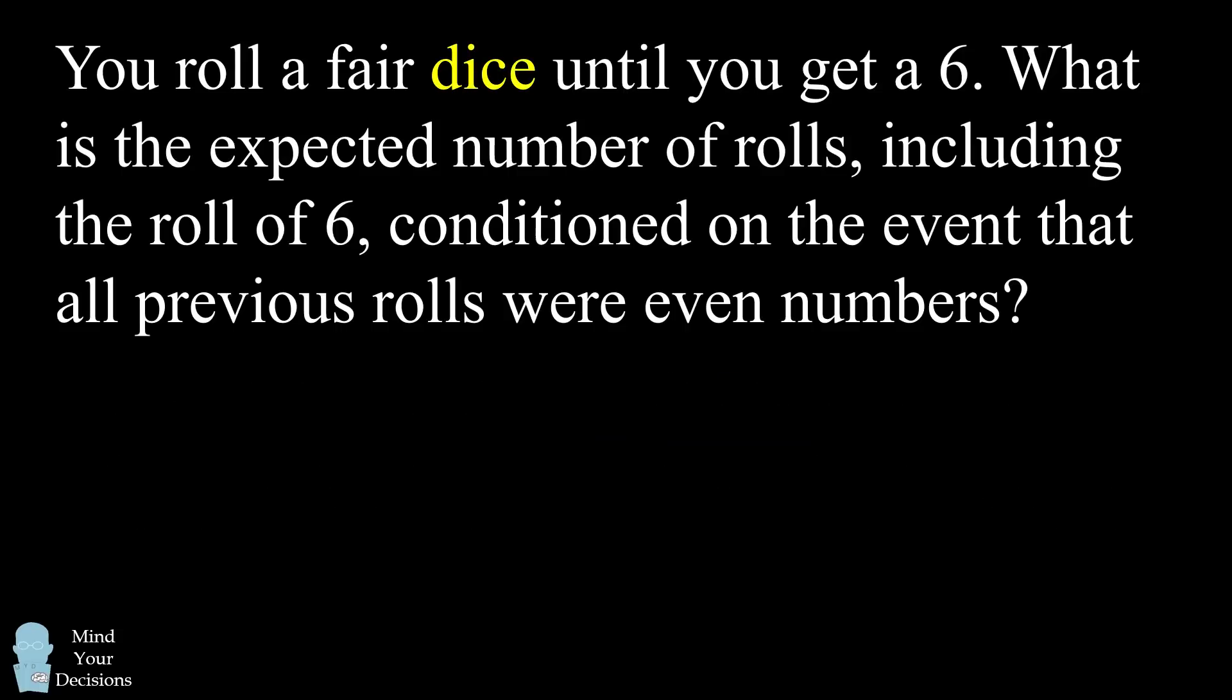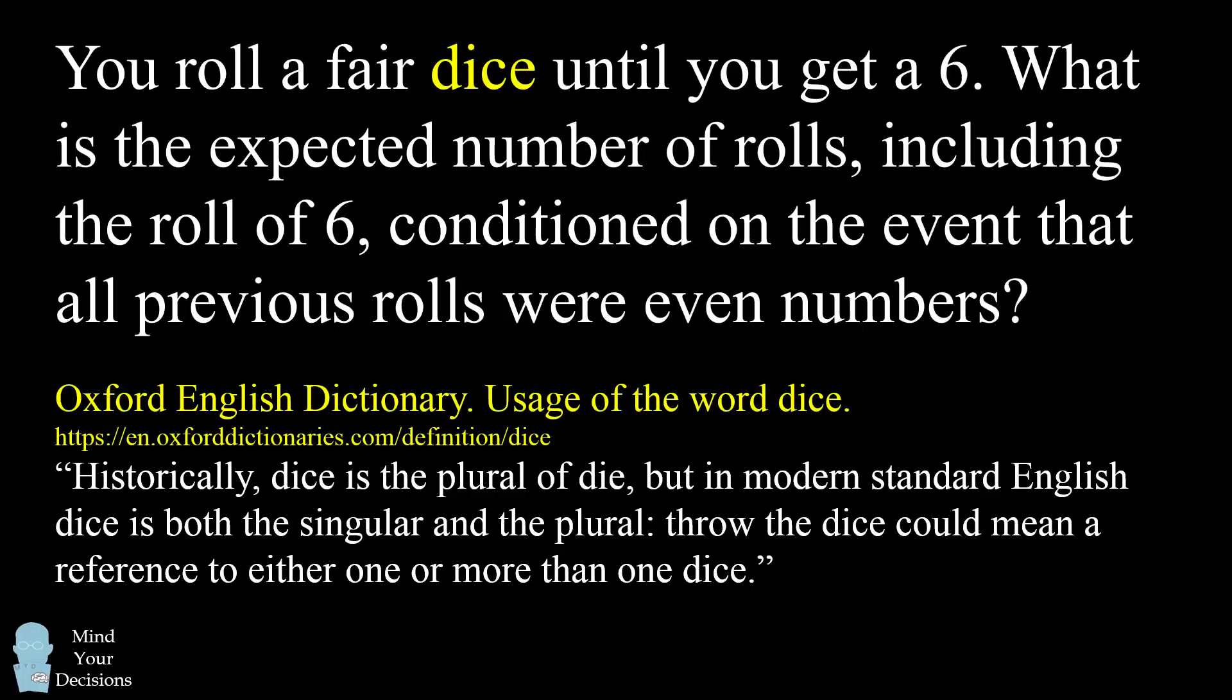I also want to mention one more point. Whenever I make videos like this, I get comments and emails that dice is a plural word and die is the correct singular. The people who write these comments and emails care about grammar, but they are not familiar with modern usage of the word dice. According to the Oxford English Dictionary, historically dice is the plural of die, but in modern standard English, dice is both the singular and the plural. In this video, I will be using dice as the singular. With that context in mind, can you figure out this problem?